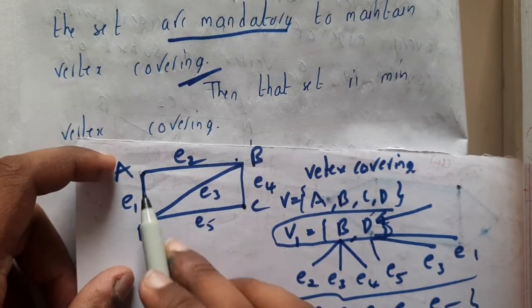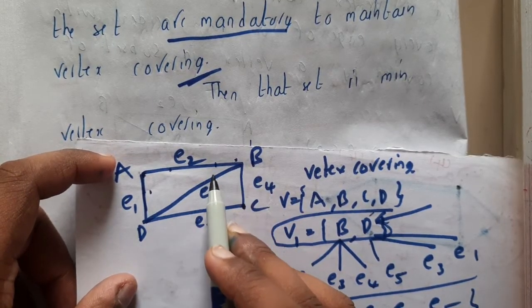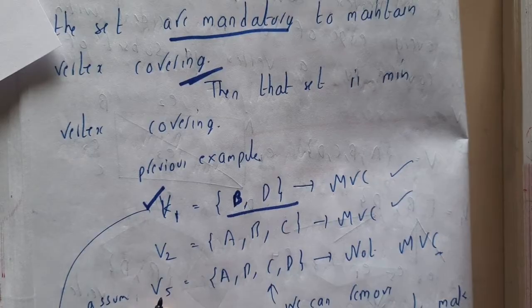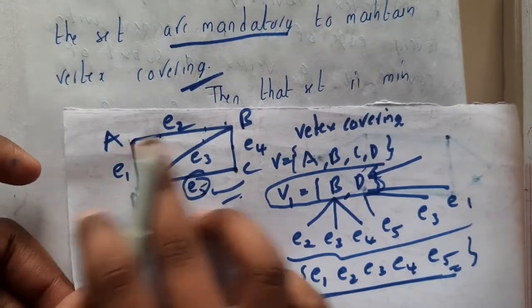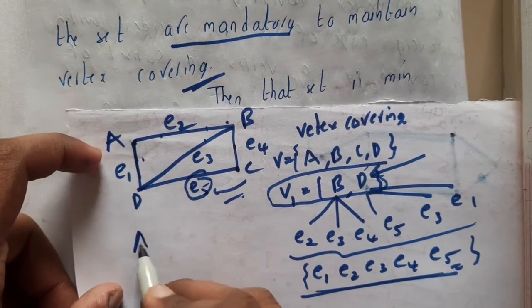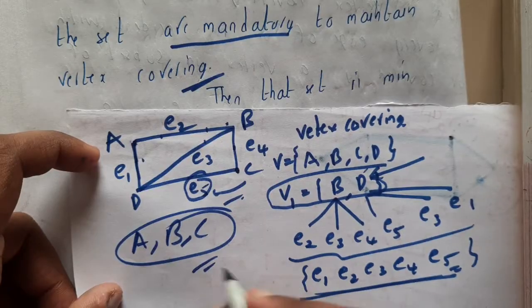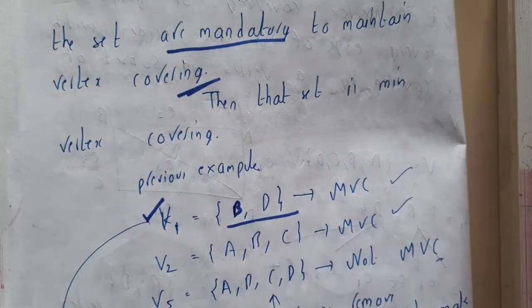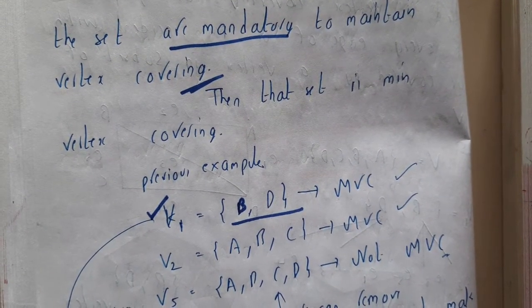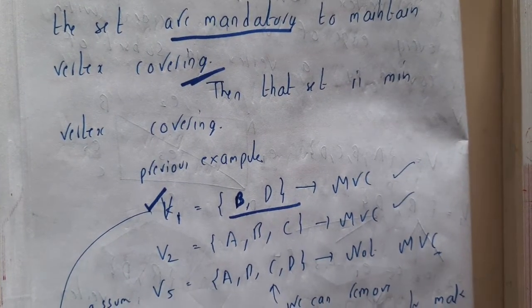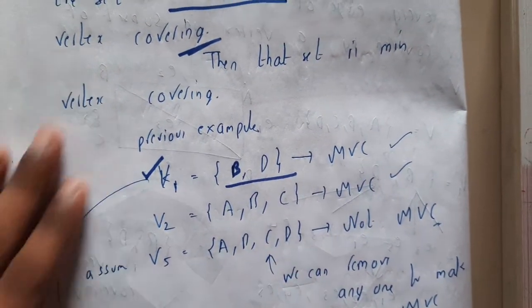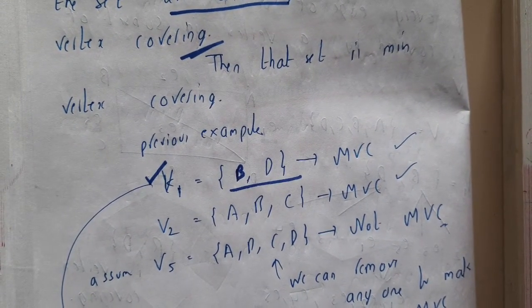For the set {a, b, c}: from a we cover two edges, from b three, and c is also mandatory since removing it leaves some edges uncovered — so everything is mandatory and {a, b, c} is a minimal vertex covering. Now consider {a, b, c, d}: even with just {a, b, c} you can cover all edges, so d is not mandatory. Therefore {a, b, c, d} is not a minimal vertex covering. You can remove any one vertex — a, b, c, or d — to make it minimal.